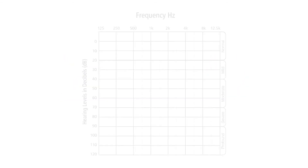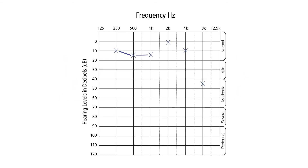With these units, we are able to pinpoint on the audiogram your hearing threshold and where you are experiencing hearing loss, from normal to profound, in both your left or right ears, and determine if you may be experiencing hearing loss greater in your left ear, right, or both.